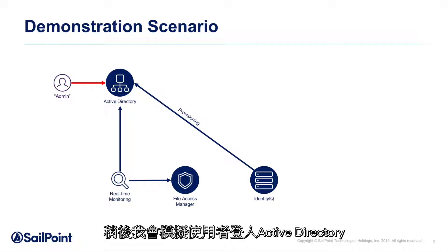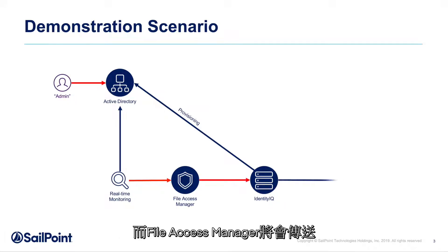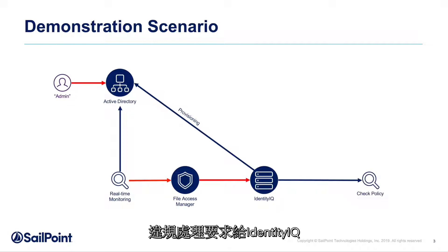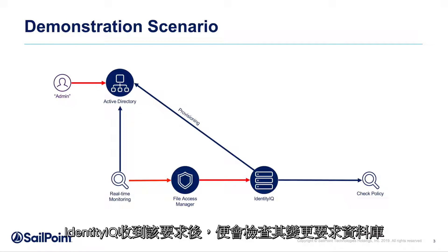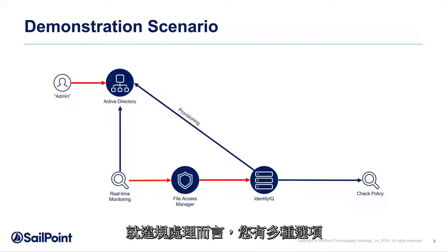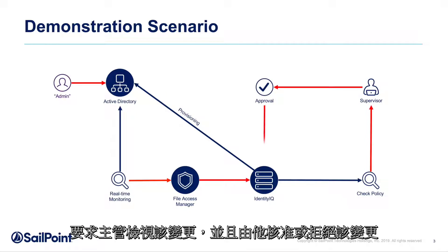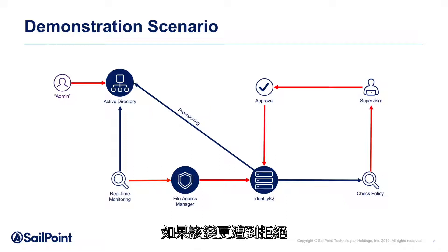What I'm going to do is simulate a user logging in to Active Directory and adding a user into a particular group. Since this change is not coming from IdentityIQ, it will be picked up by File Access Manager, and File Access Manager will send a violation request to IdentityIQ. After IdentityIQ receives it, it will check its change request database. If it cannot find the change request, it will raise a violation. In this example, what I'm going to do is send an approval request to the supervisor, ask the supervisor to review the changes, and get them to approve or reject the change.